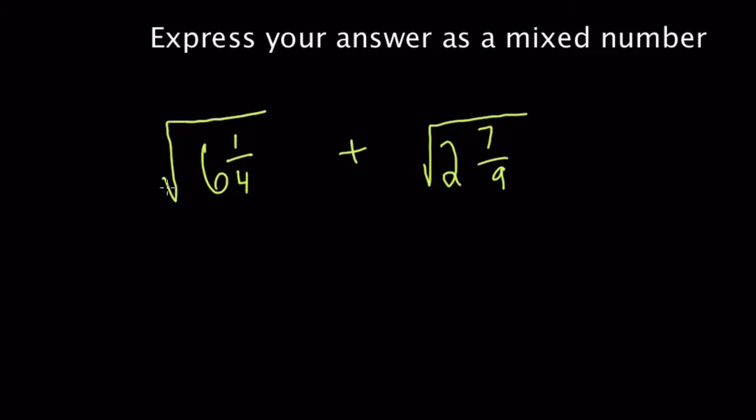All right, so here we are dealing with the square roots of two mixed numbers, and we have to express our answer as a mixed number. So what I would do for each of these problems, for the first one, is write them as improper fractions.